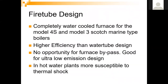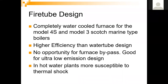Advantages of a fire tube boiler: completely water-cooled furnace, typically higher efficiency than a water tube design, no opportunity for furnace bypass — which is great for ultra-low emissions design — and tubes sealed at the tube sheets on either end. One downside: in a hot water plant with a 500 horsepower boiler, tubes are about 20 feet long. If varying return water temperatures are sent into that boiler, those fixed tubes start to expand and contract — potentially an inch on either side — causing thermal shock. You must be careful not to thermally shock the boiler and create leaks.